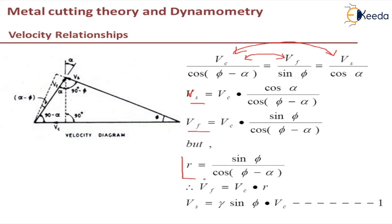So which we have already derived in previous videos. So therefore, Vf will be equal to Vc into R that is instead of this we are substituting it as R. So Vf will be equal to Vc into R.